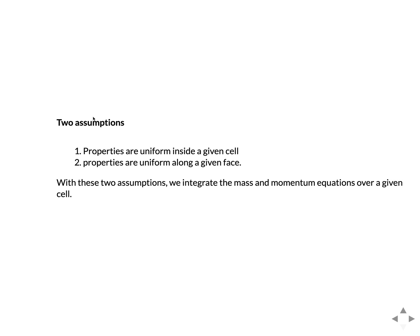We integrate our equations over these cells. Our momentum and continuity equations are already written in integral form, which facilitates their use on a computational grid. We make two assumptions in the finite volume method — not required but common: first, that properties are uniform inside a given grid cell, and second, that properties are uniform along a given face.